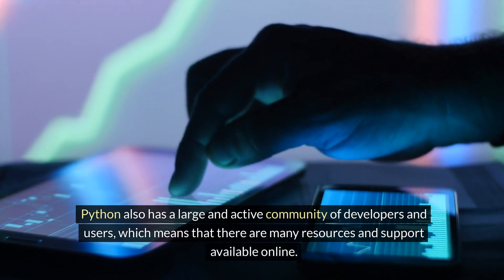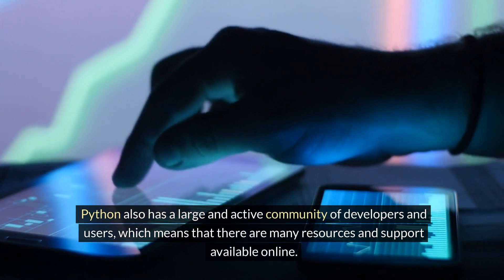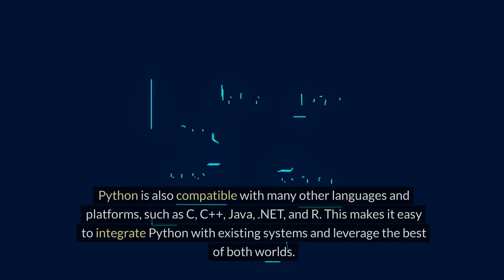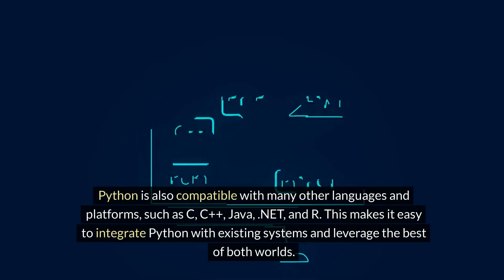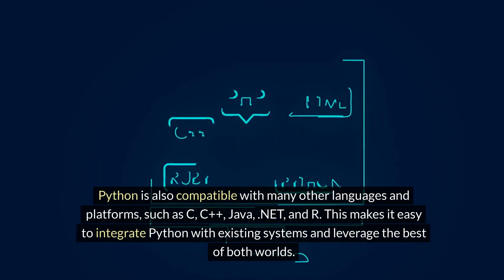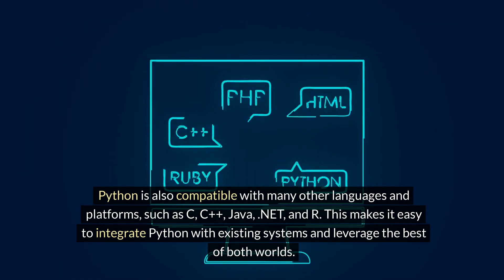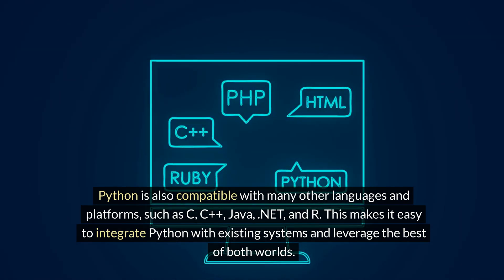Python also has a large and active community of developers and users, which means that there are many resources and support available online. Python is also compatible with many other languages and platforms such as C, C++, Java, .NET, and R. This makes it easy to integrate Python with existing systems and leverage the best of both worlds.